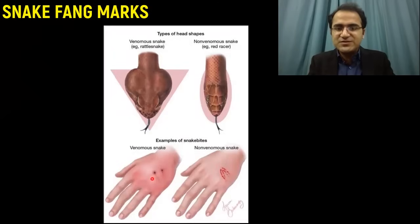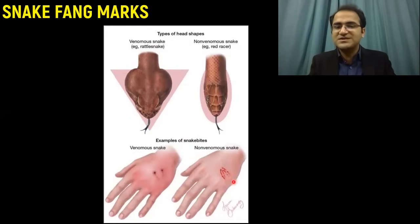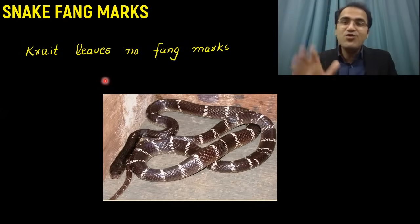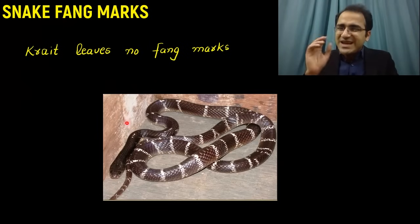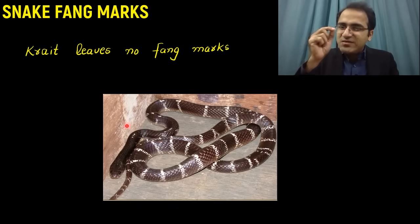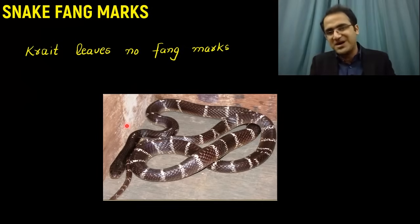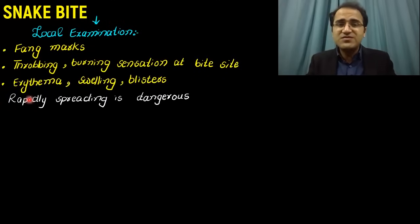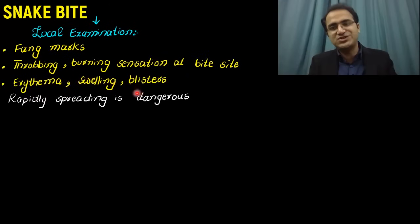Remember, krait leaves no fang marks most of the time, as it has very thin fangs that do not even leave a bite mark. After local examination and checking fang marks, look for erythema, swelling, and blisters.